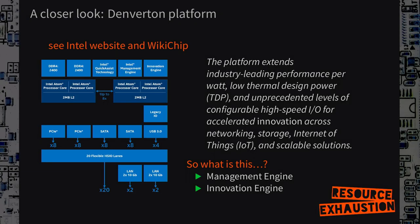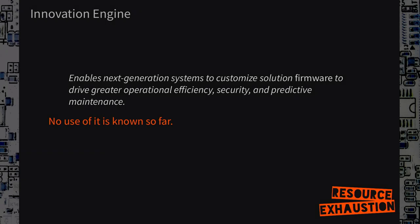Let's look closer at the Denverton platform. Denverton is one of those platform model names Intel always comes up with. Here we have a brief summary of what peripherals exist. If you look very closely in the upper right corner, there are two so-called engines mentioned. One is the innovation engine, the other is the management engine — which we're dealing with today. The innovation engine has a brief description about innovation and firmware, but I have not yet found any use for it. It's there in your hardware, but I don't know what it's for.